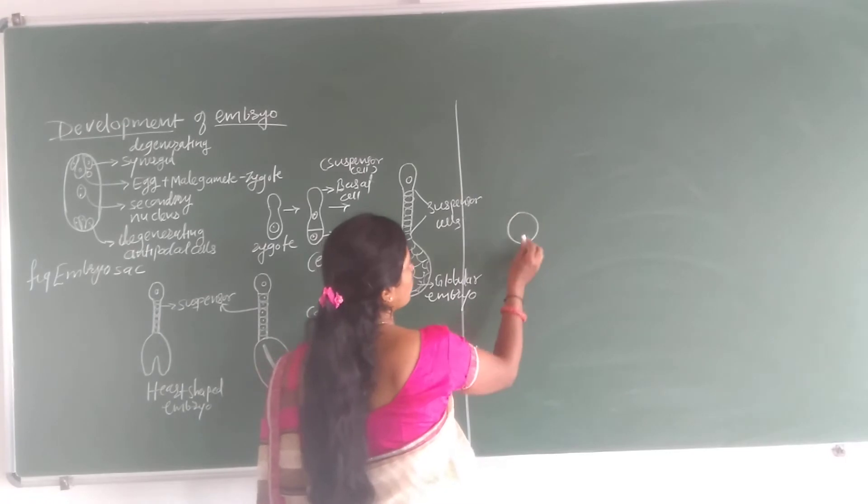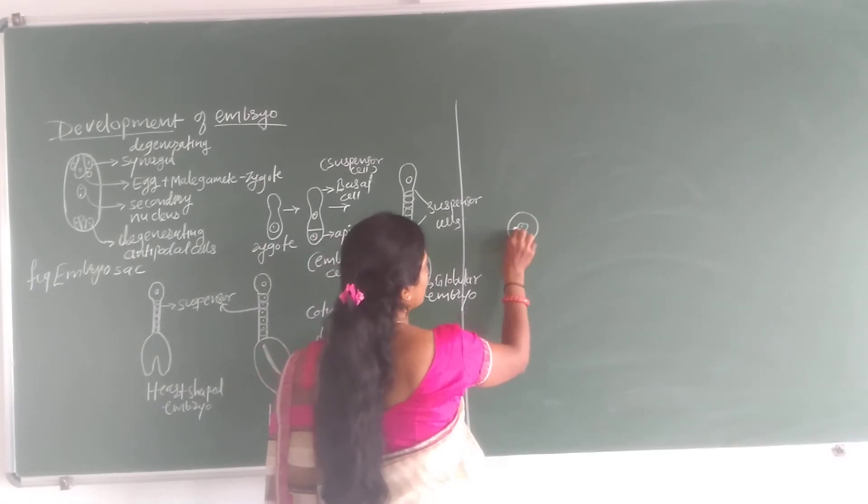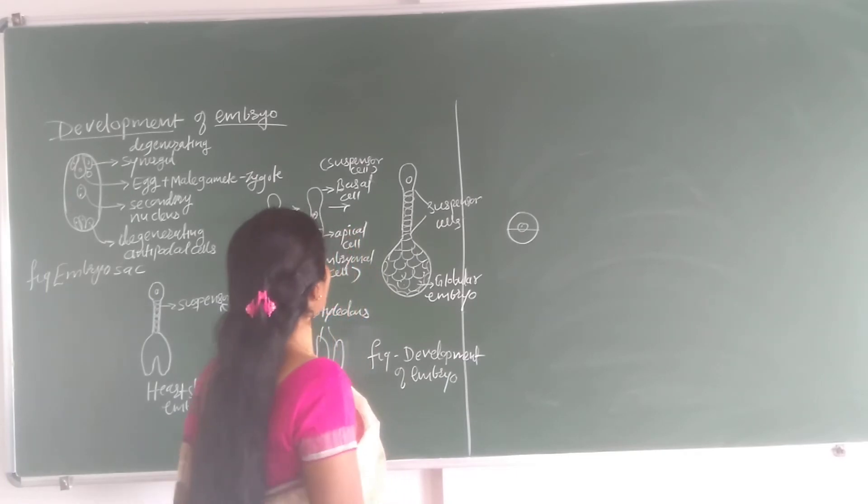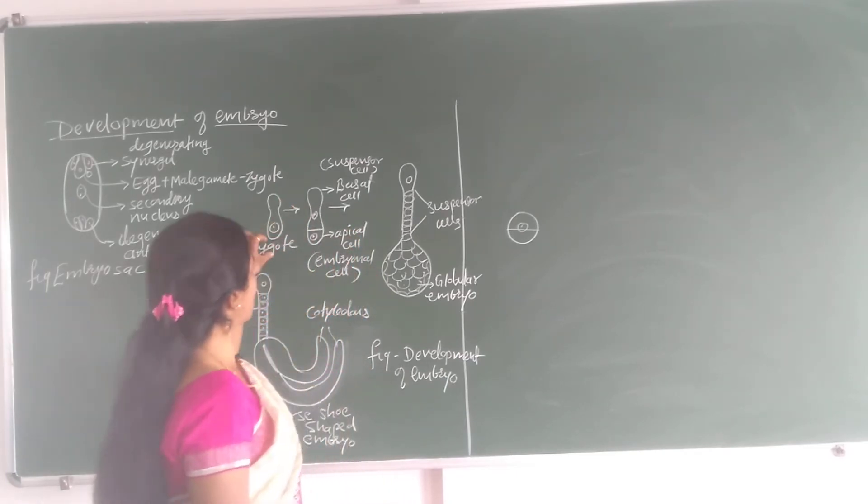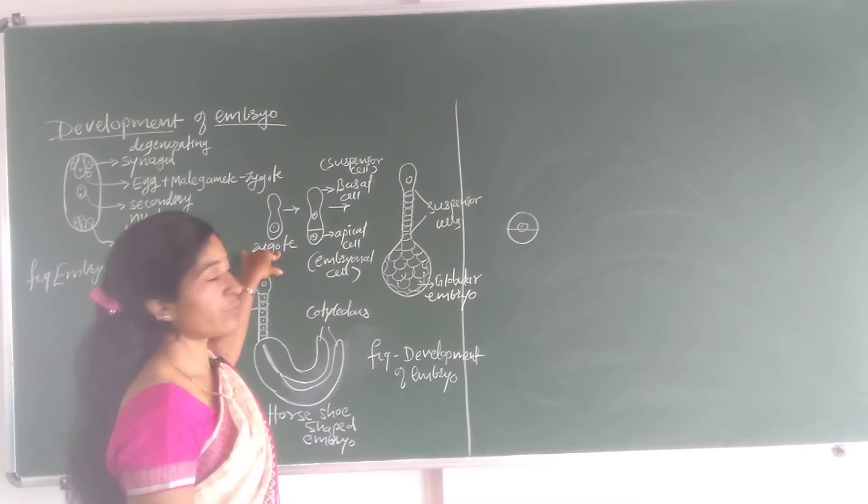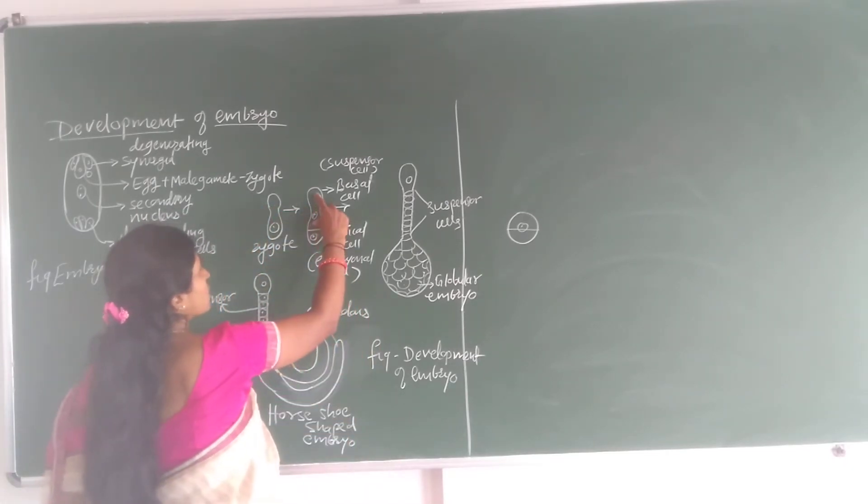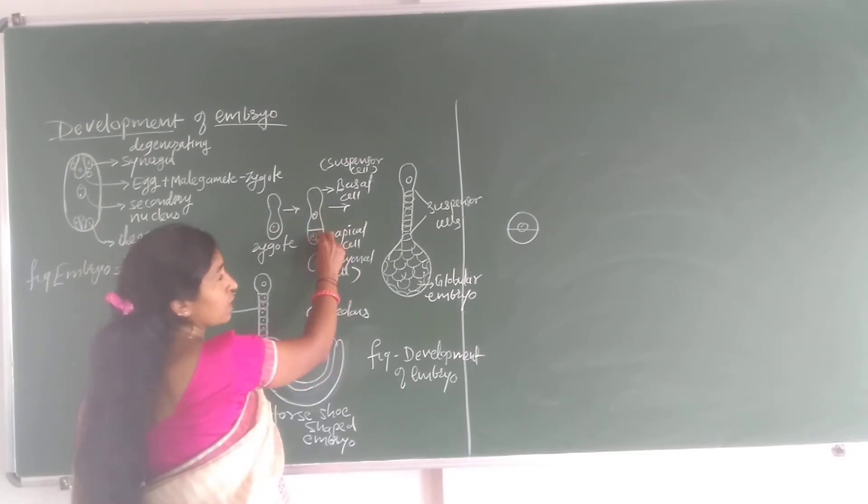Zygote undergoes a division that is a transverse division and due to that division what happens? Two cells form from this zygote. Zygote undergoes a mitotic division to form two cells. One is a larger cell and one is a smaller cell.